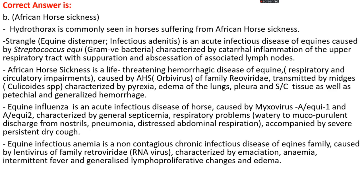Equine influenza is an acute infectious disease of horses caused by Myxovirus equi-1 and Myxovirus equi-2, characterized by general septicemia and respiratory problems including watery to mucopurulent nasal discharge, pneumonia, distressed abdominal respiration, and severe persistent dry cough. Equine infectious anemia is a non-contagious chronic infectious disease of equines caused by lentivirus of family Retroviridae (an RNA virus), characterized by emaciation, anemia, intermittent fever, generalized lymphoproliferative changes, and edema.